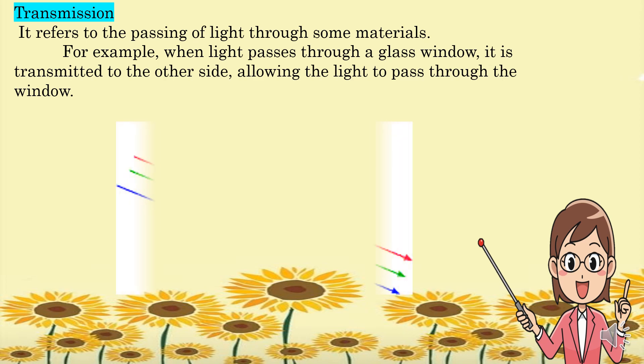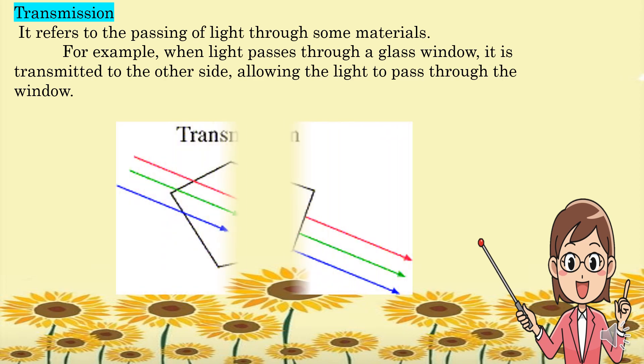Transmission refers to the passing of light through some materials. For example, when light passes through a glass window, it is transmitted to the other side, allowing the light to pass through the window.